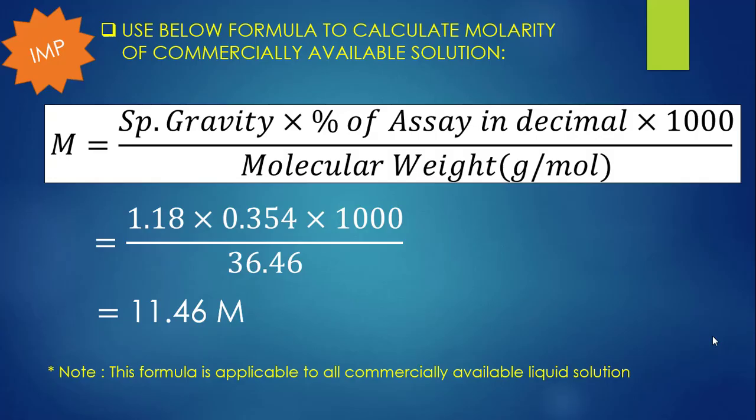Note down these three values. The formula applicable to all commercially available liquid solutions is: M = (specific gravity × percentage purity as decimal × 1000) / molecular weight. Substituting: (1.18 × 0.354 × 1000) / 36.46. The molarity of the hydrochloric acid stored in the reagent bottle is 11.46 molar.